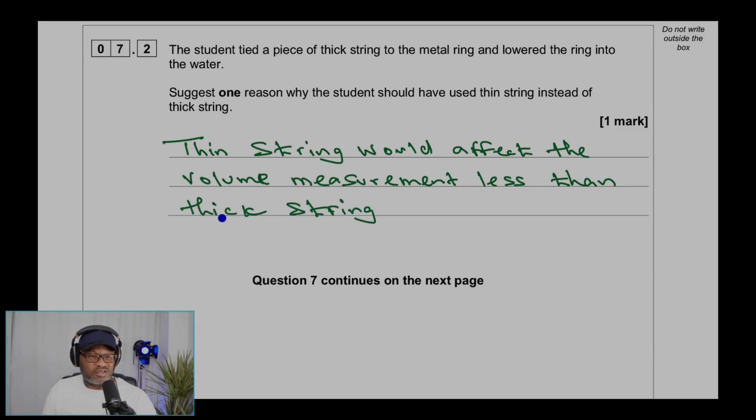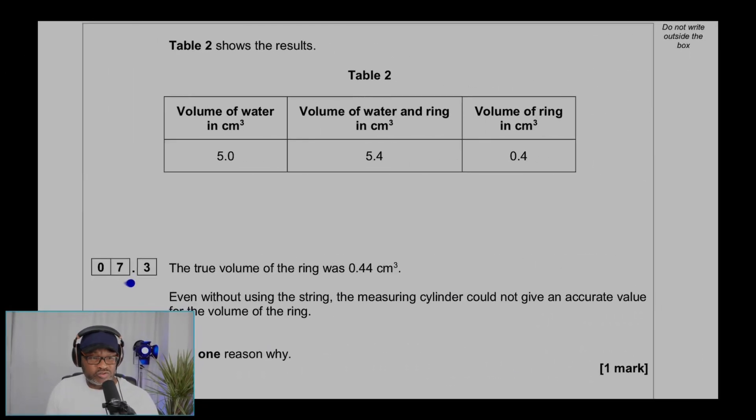For question 7.3, Table 2 shows the results: Volume of water in centimeter cube 5, Volume of water and ring in centimeter cube 5.4, Volume of ring in centimeter cube 0.4. Yes, you take that away from there to get that.